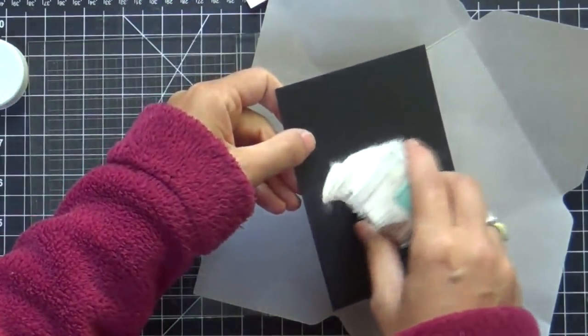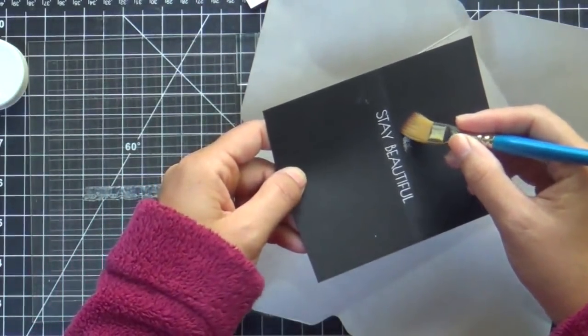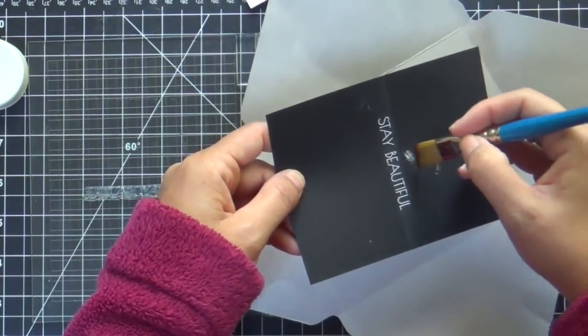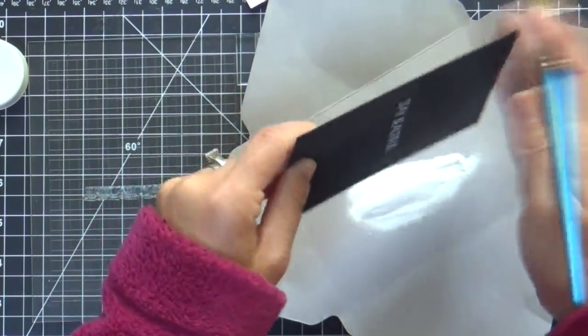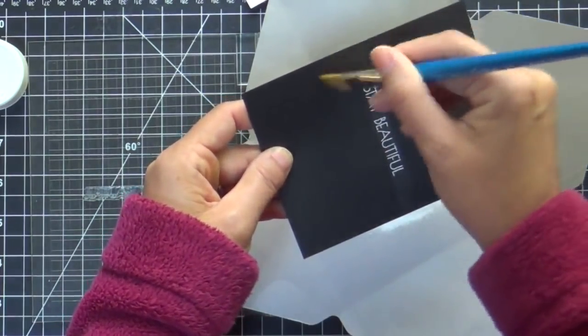I'm using white embossing powder, and you can see I got some extra sticking where I didn't want it. So I took my dry paintbrush and easily got all that off. I do this every time.